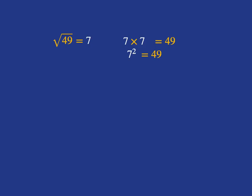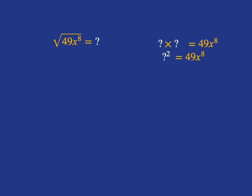So now, if we introduce some algebra into it, we're asking: what's the square root of 49x to the power of 8? Same question as before — what positive number, when multiplied by itself, gives us 49x to the power of 8?